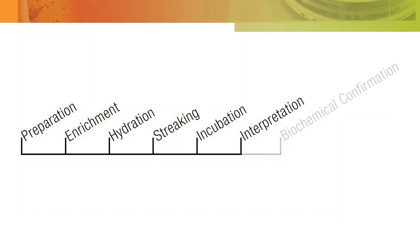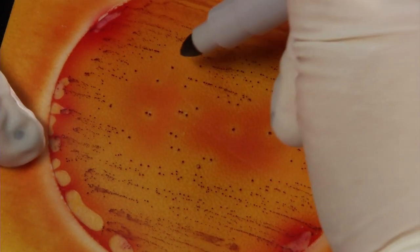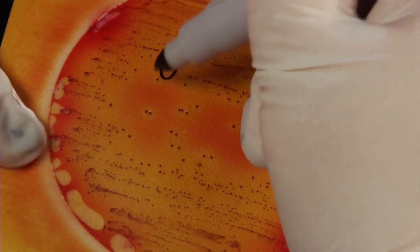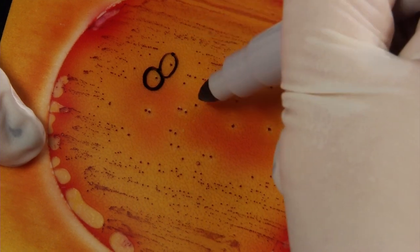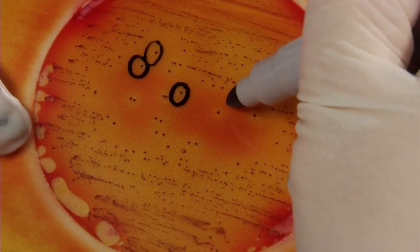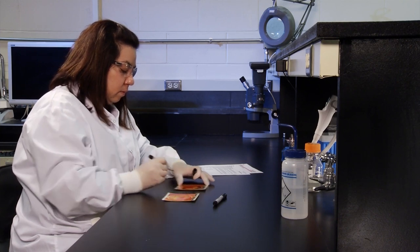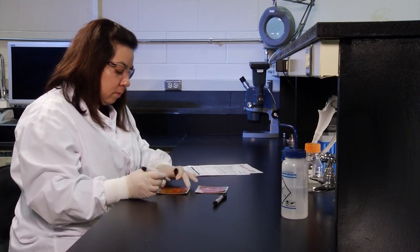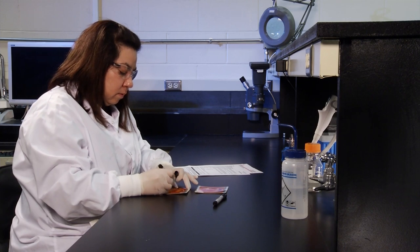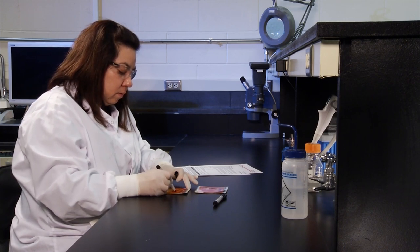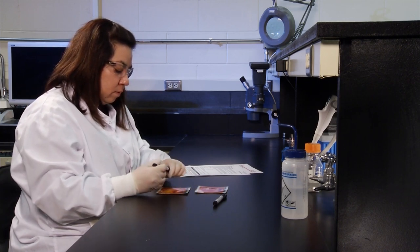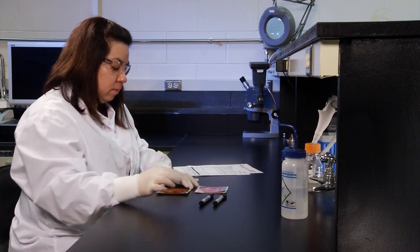If you have found presumptive positive salmonella colonies, perform the following steps. First, take out a permanent ultrafine tip marker and circle a minimum of five isolated presumptive positive salmonella colonies on the 3M PetriFilm Salmonella Express Plate top film. Second, biochemically confirm all circled salmonella presumptive positive results using the 3M PetriFilm Salmonella Express Confirmation Disc.